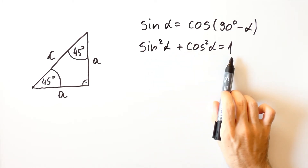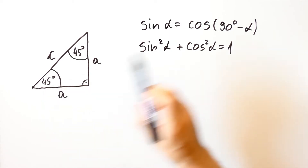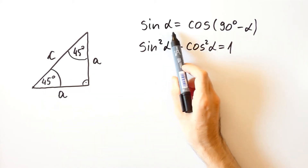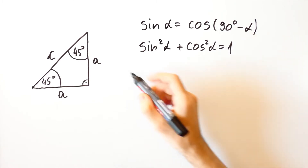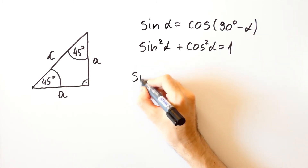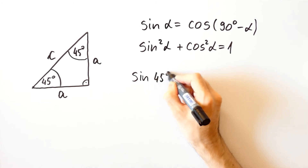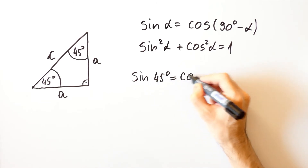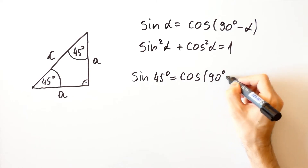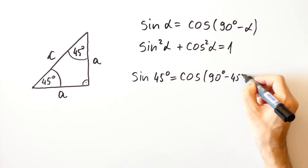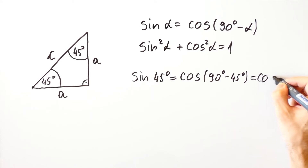However, in this particular case, when alpha is equal to 45 degrees, alpha and 90 degrees minus alpha are equal, which means that the sine of 45 degrees is equal to the cosine of 90 degrees minus 45 degrees, and that is equal to the cosine of 45 degrees.